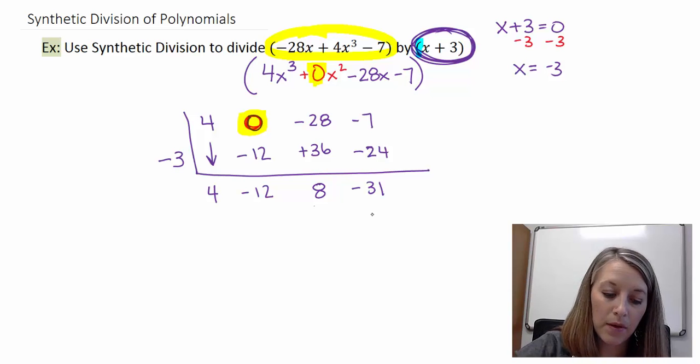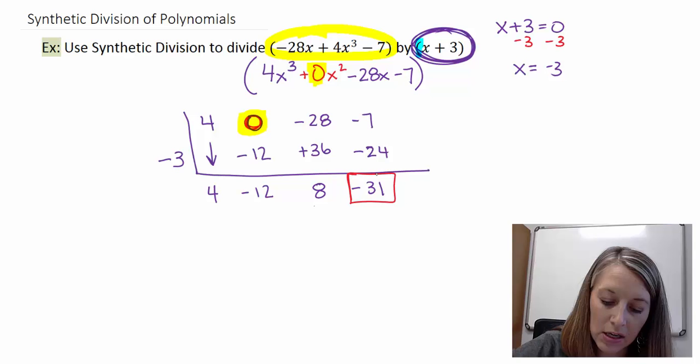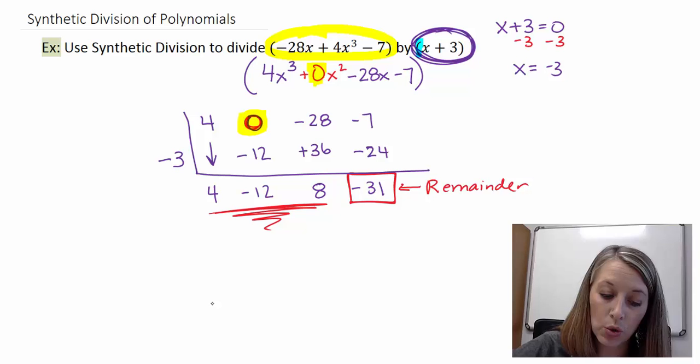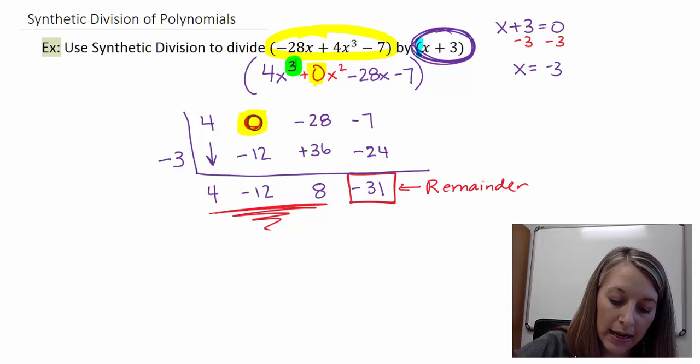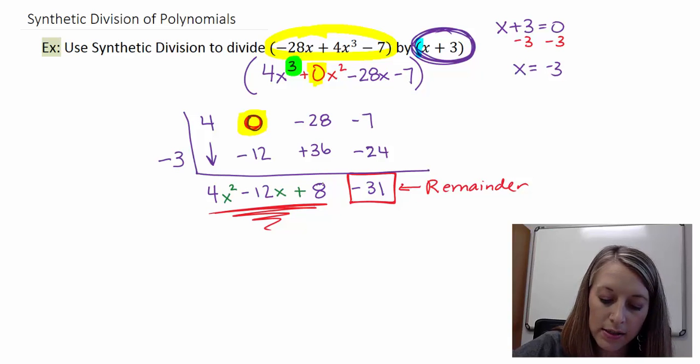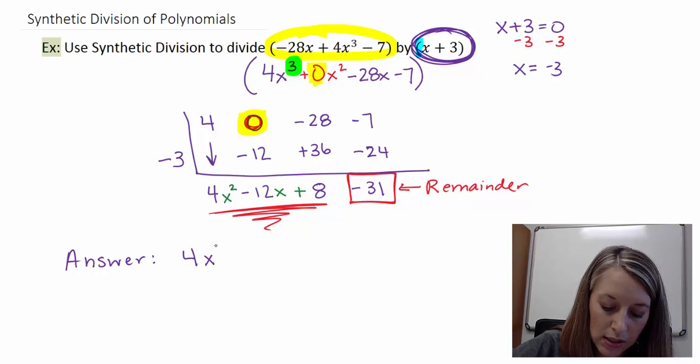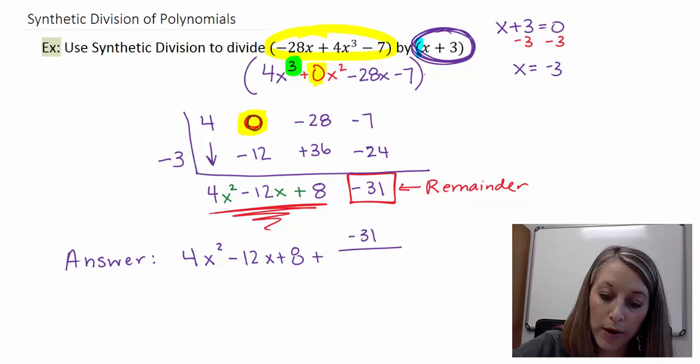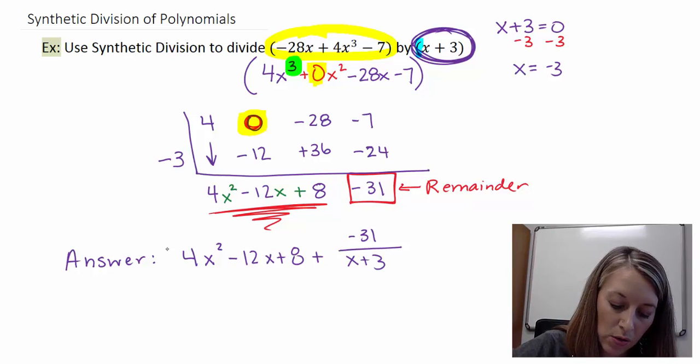So the process is quick and painless. But what does this actually mean? Remember, whatever this is here, our last digit, that's always our remainder. And whatever we have here is our quotient, is our answer. But we start one degree less. So my original polynomial started out with an x cubed. So my answer is going to start out with x squared. So this is 4x squared minus 12x plus my constant term of 8. So if it just wants the division answer, then I have my quotient plus my remainder over my original divisor of x plus 3. And so there's my answer for that.